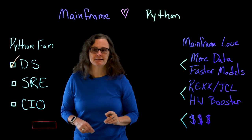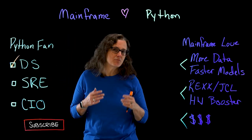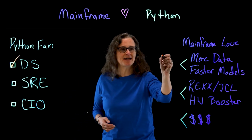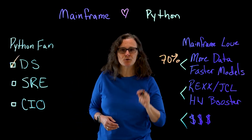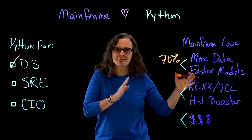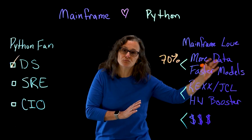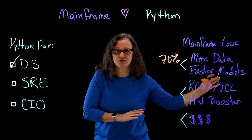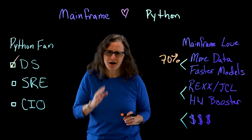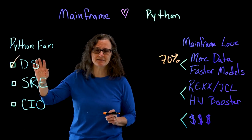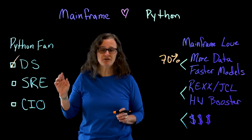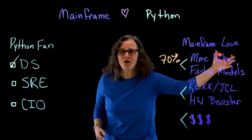Let's say you're a data scientist. As a data scientist, you care about more data and fast processing. Well, the mainframe today has 70% of the world's structured data on the system. So you have access to large amounts of very important data that run banking systems, insurance systems, the financial world. Using Python — the Python you're used to, current versions of Python — the most popular Python packages that you use for data science are available on the mainframe as well. So you can use your skill, your knowledge, and apply it to all of this data.